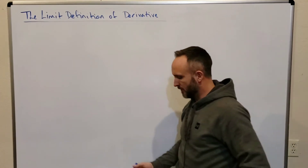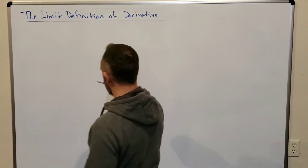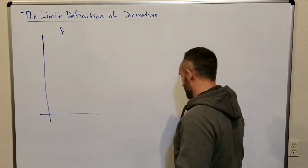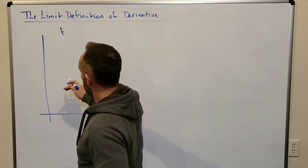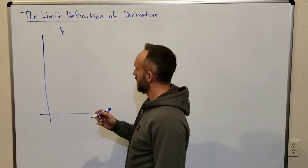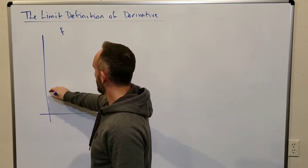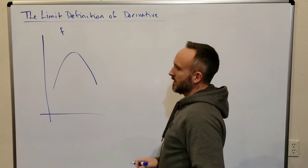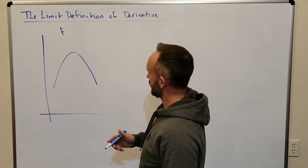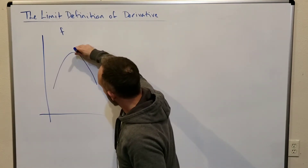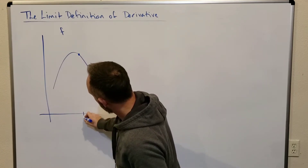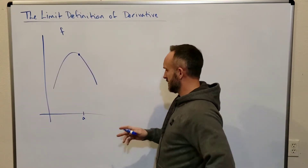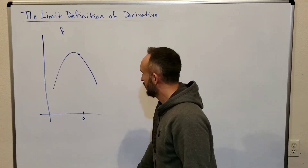We're going to start by looking at some function f. Let's say this function is a curve — we don't want a straight line, that's not a very interesting case. We'll make it an upside-down parabola as an example. We'll pick a particular point on this curve whose corresponding x value is a.